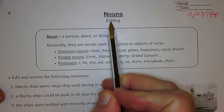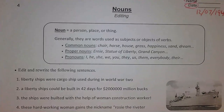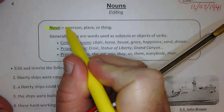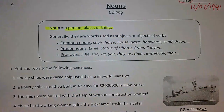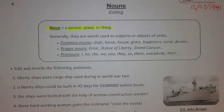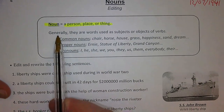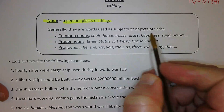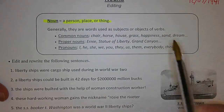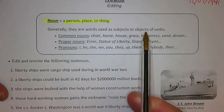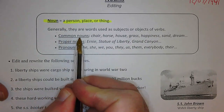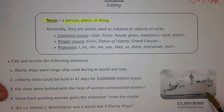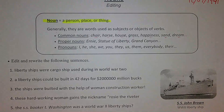Our topic today is nouns. I'm going to highlight the key term. A noun, as you know, is a person, place, or thing. Nouns are all around us — when we write, most of your words are nouns. Generally, nouns are words used as subjects or objects of verbs. Nouns support the verbs, and they kind of work together. Common nouns are things like the chair, the horse, the house, the grass, happiness, sand, dreams. Common nouns we don't capitalize — we just leave them lowercase.